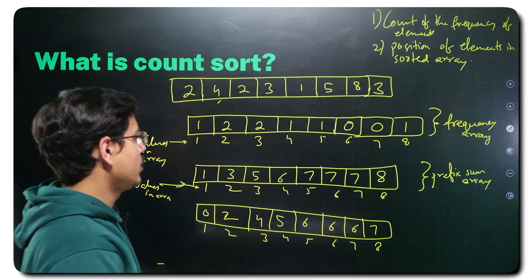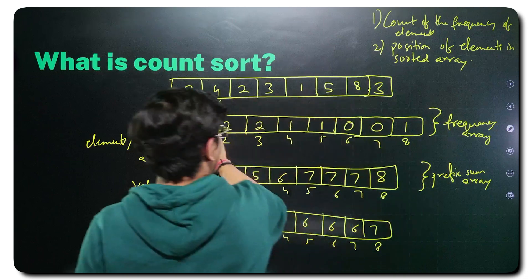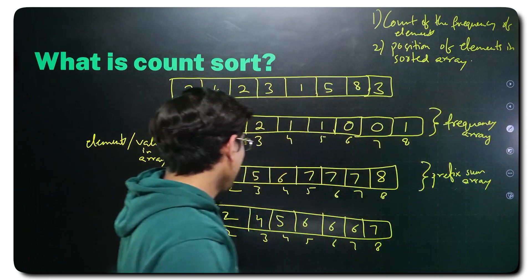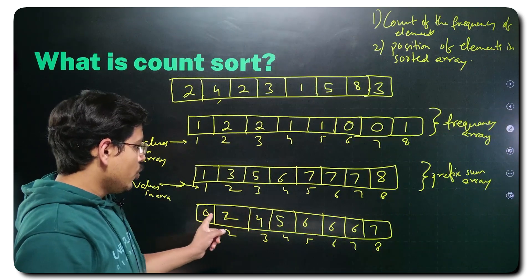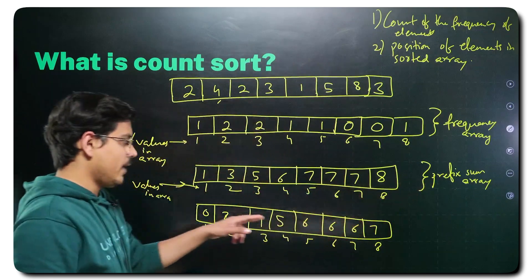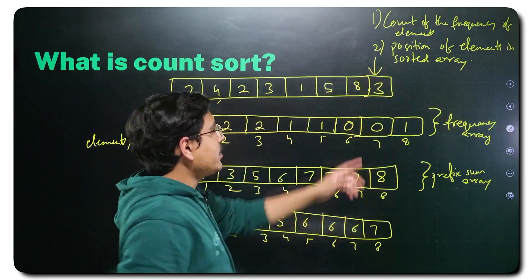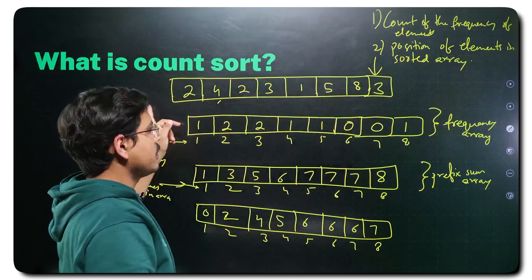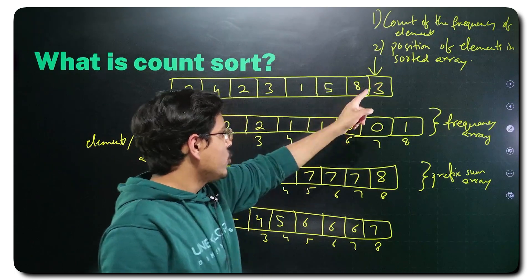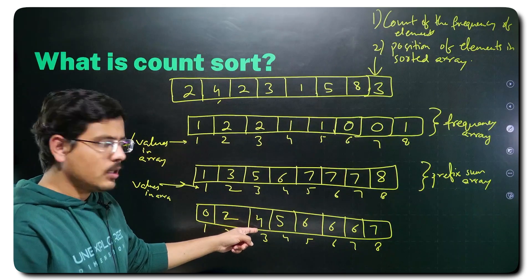Now when you are trying to sort the array out, you have the final updated array in the prefix sum array. What you have to do is initialize a pointer and start traversing this array in reverse order from the last element to the first element. All you need to do is check the occurrence of each element. For 3, you check what is the position — this will tell the correct position. For 3, index 4 should be the correct position.